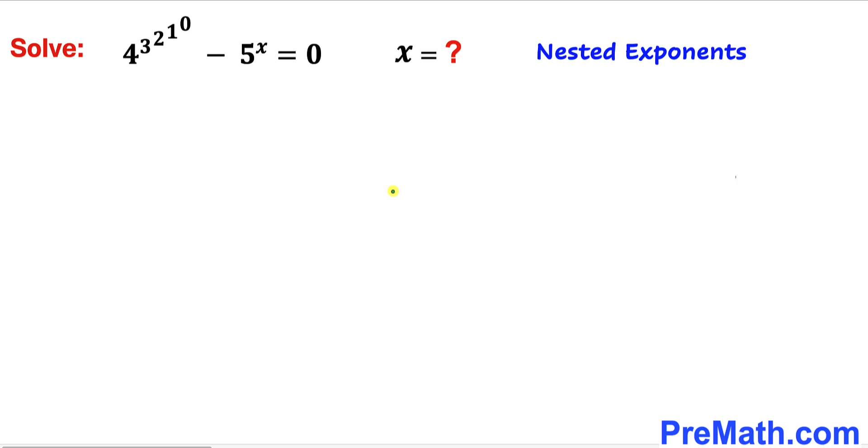Welcome to pre-math. In this video we are going to solve this given exponential equation with nested exponents: 4^(3^(2^(1^0))) - 5^x = 0. Our task is to find the value of x.